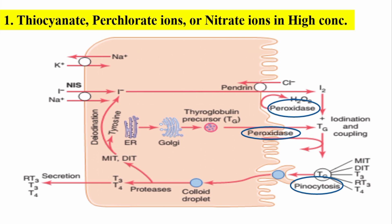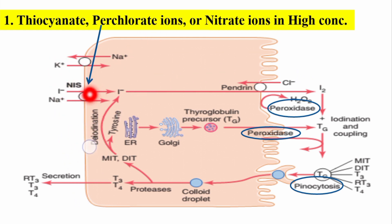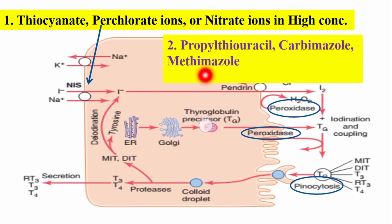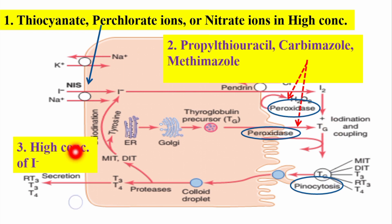Here is a brief mechanism of action of the drugs discussed, using the hormone synthesis picture from the first lecture of the thyroid series. Thiocyanate, perchlorate, and nitrate ions in high concentration act on the sodium-iodide symporter on the basolateral side, inhibiting this pump so that iodide trapping — transport of iodide from blood to cell — is decreased, reducing hormone formation. Propylthiouracil and methimazole are peroxidase inhibitors; since peroxidase is a very important enzyme in thyroid hormone formation, inhibiting it stops or decreases hormone formation. High concentration of iodide ions also blocks the sodium-iodide symporter and decreases thyroid hormone synthesis.